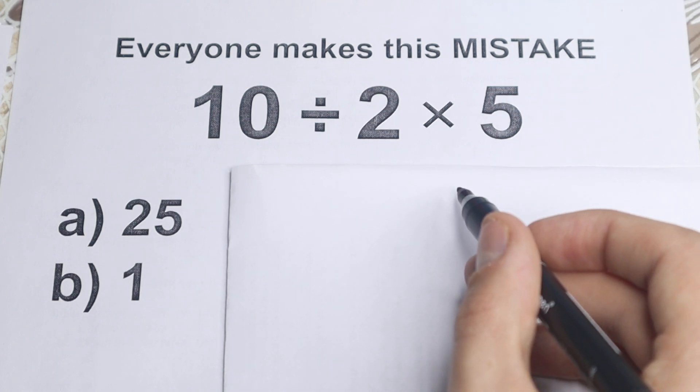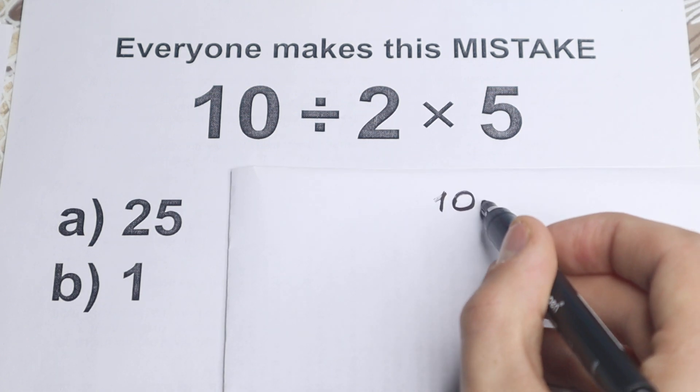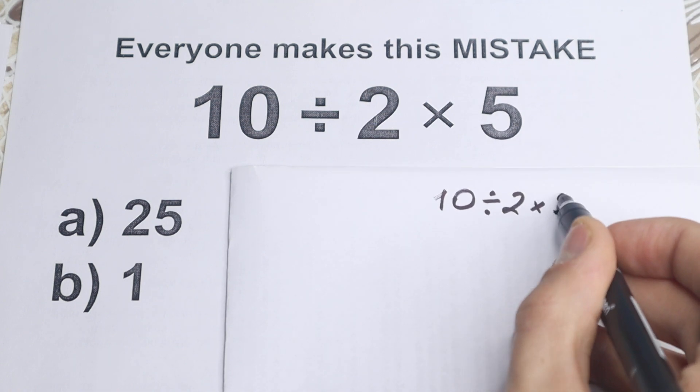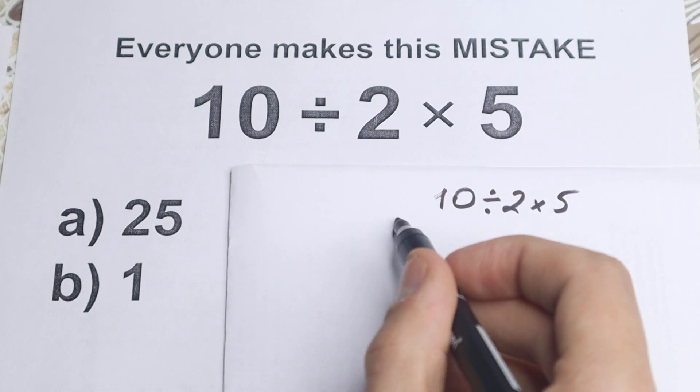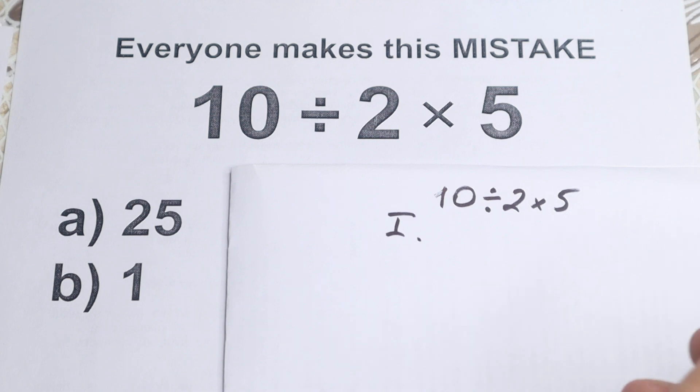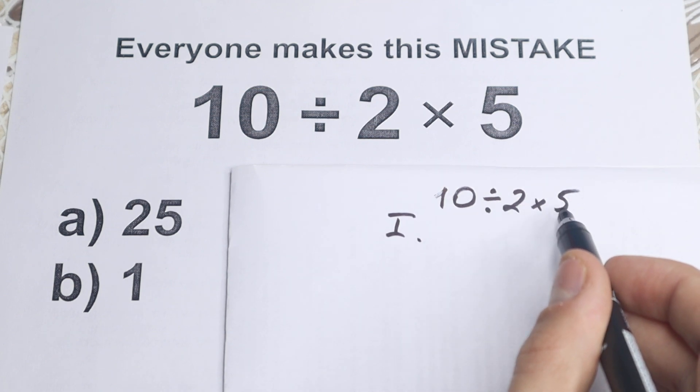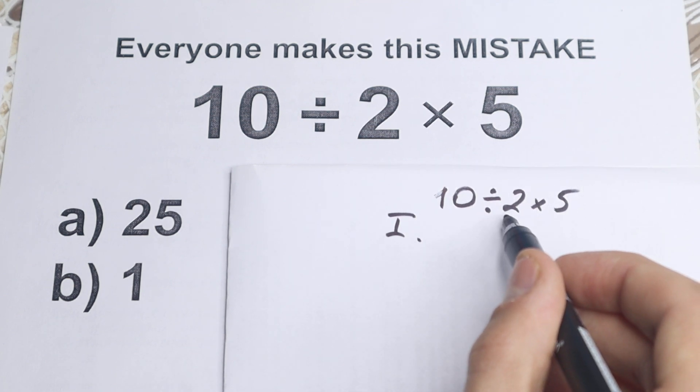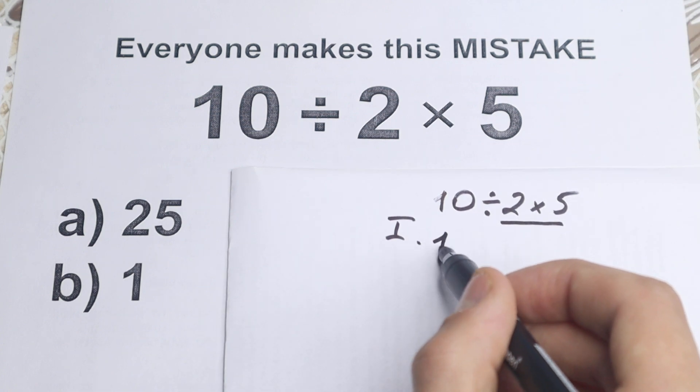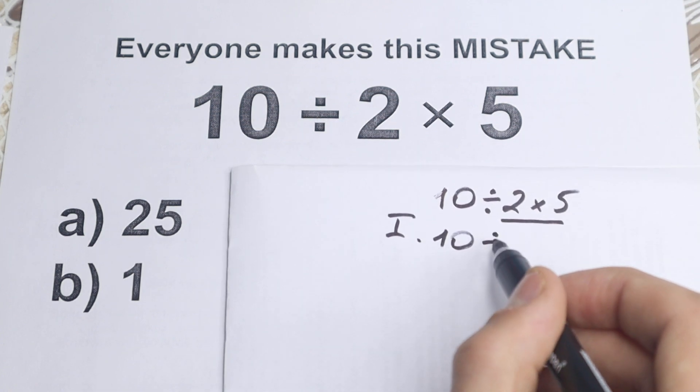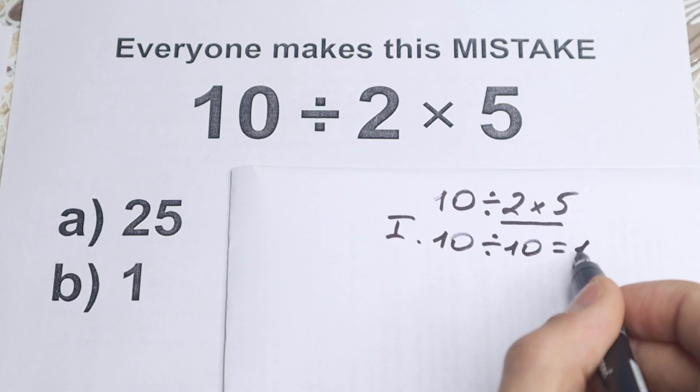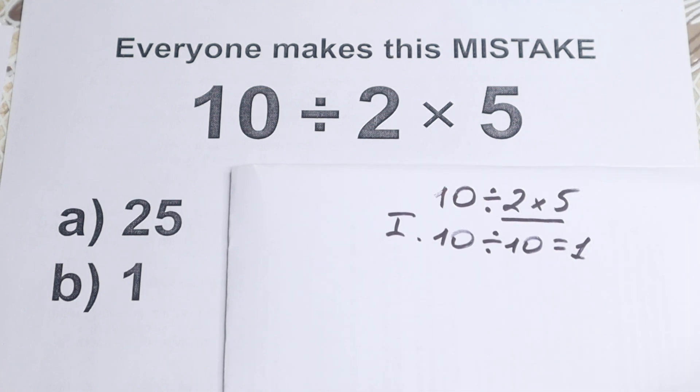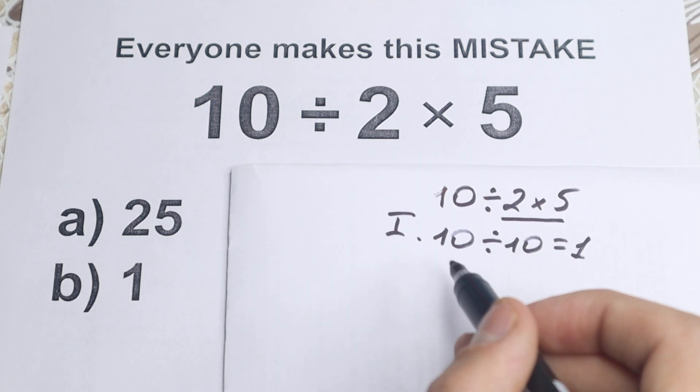So I just want to rewrite this problem: 10 divided by 2 times 5. Okay, how can we solve it? The first step, the first way how a lot of students solve it. So we have 2 times 5 which is equal to 10. They start with this multiplication. So we have 10 and 2 times 5 equal to 10. So 10 divided by 10 equal to 1. So this is the first group of students. A lot of students solve it like that.